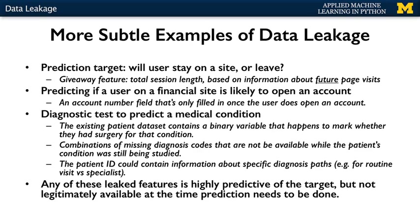Another example of future information leaking into the past might be if you were developing a diagnostic test to predict a particular medical condition. The existing patient dataset might contain a binary variable that happens to mark whether or not the patient had surgery for that condition — obviously, such a variable would be highly predictive of the medical condition. There might also be a certain combination of missing diagnosis codes that was very indicative of the condition, but again, these would not be legitimate to use, since that information isn't available while a patient's condition is still being studied.